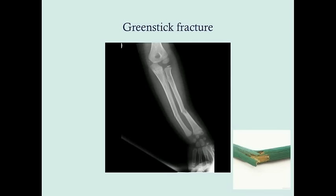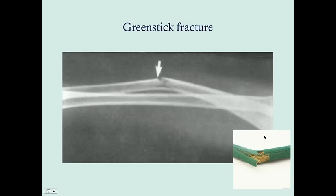This is a greenstick fracture. Greenstick fractures happen in children because they have softer bones. This shows a greenstick fracture of both the ulna and radius — you can see the bending and breaking. It gets its name from a green stick. Here's another greenstick fracture, which appears to be the radius.